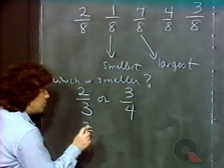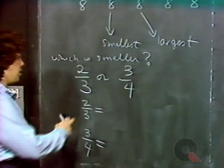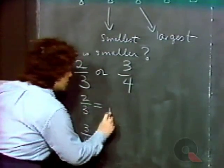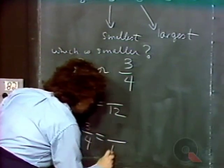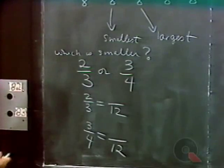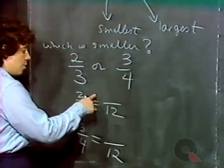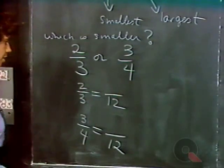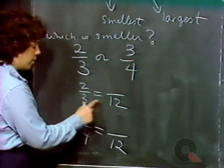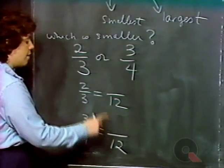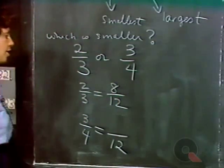If we want to turn two-thirds and three-quarters into fractions having the same denominator, the lowest common denominator here would be 12. Remembering the fundamental principle of fractions, we can multiply both the numerator and the denominator of a fraction by the same non-zero number and get an equivalent fraction. To turn thirds into twelfths, we multiply the denominator by four — giving 12 — and the numerator by four as well, giving eight. Two-thirds is equivalent to eight-twelfths.